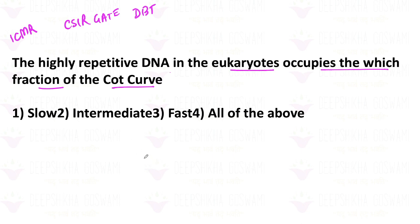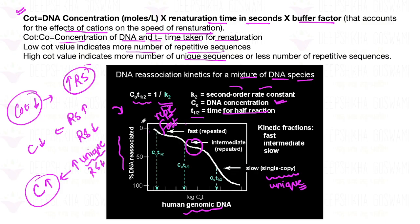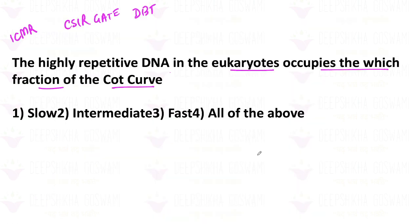Highly repetitive DNA means re-naturation should be very fast. So highly repetitive sequences go in the fast re-associating area, and single-copy sequences go in the slow area. Since the question asks about highly repetitive DNA, it will definitely be in the fast fraction. Option 3 — the fast fraction — is the correct answer.